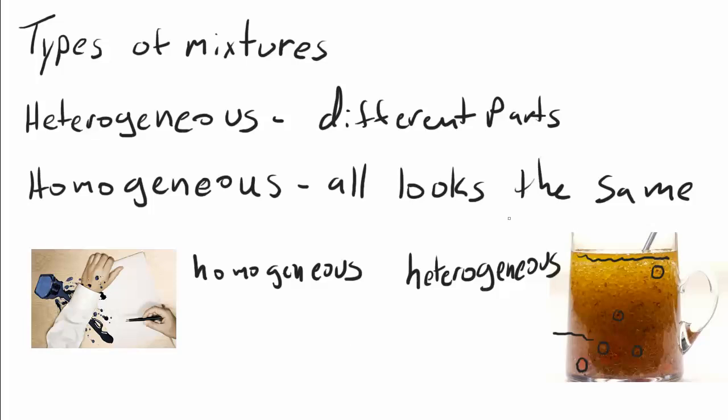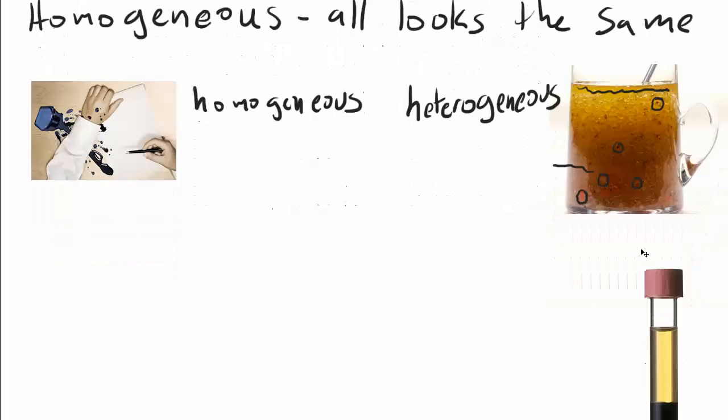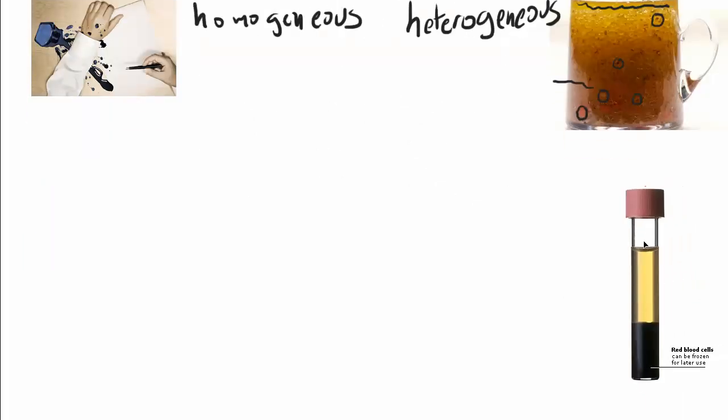And I would say that these are probably pretty important because most of the stuff that's around you in everyday life is some form of a mixture. Almost all living things are heterogeneous mixtures or parts of living things are heterogeneous mixtures. If you think about like blood, for example, this is a little test tube that's got some blood in it.